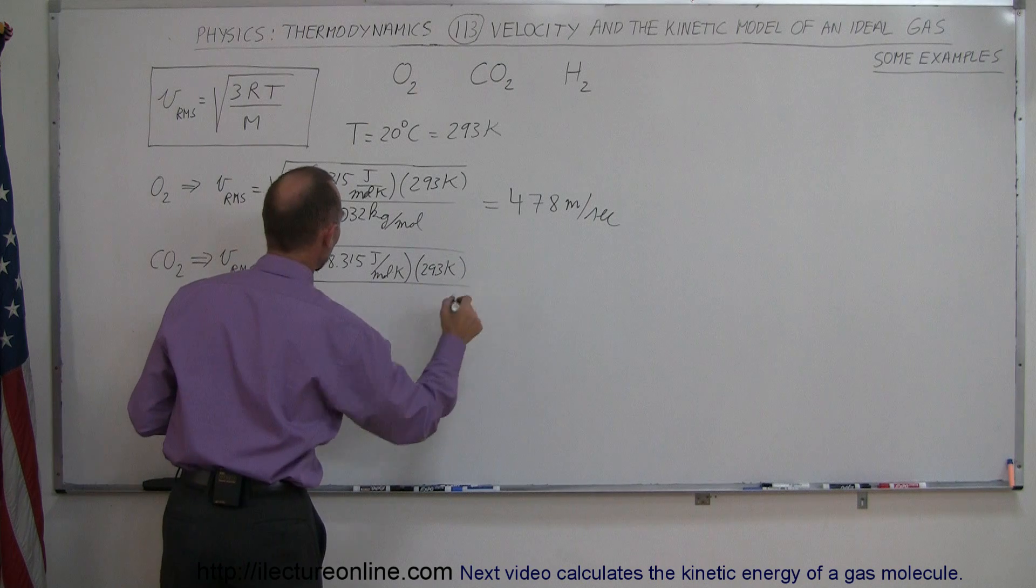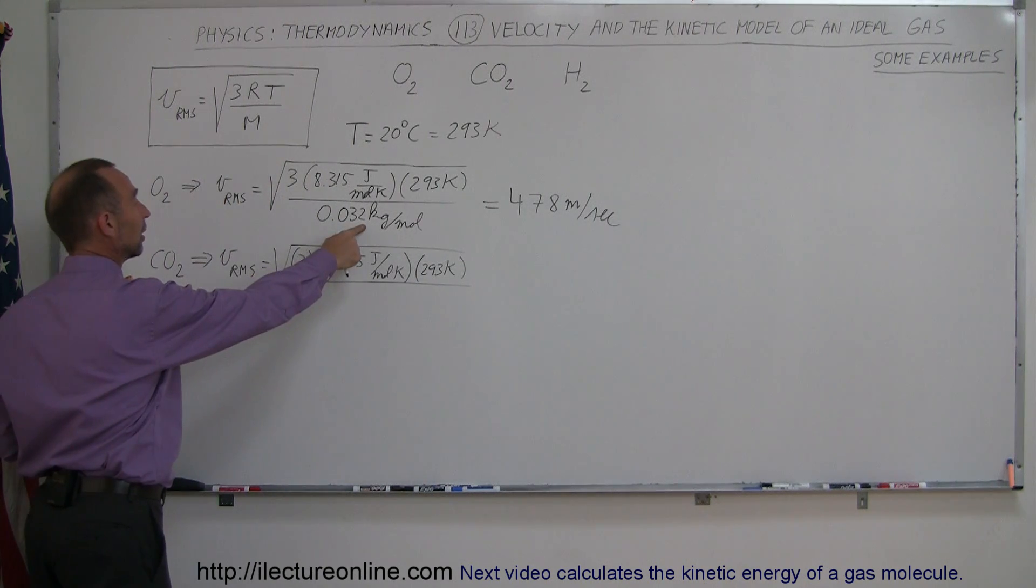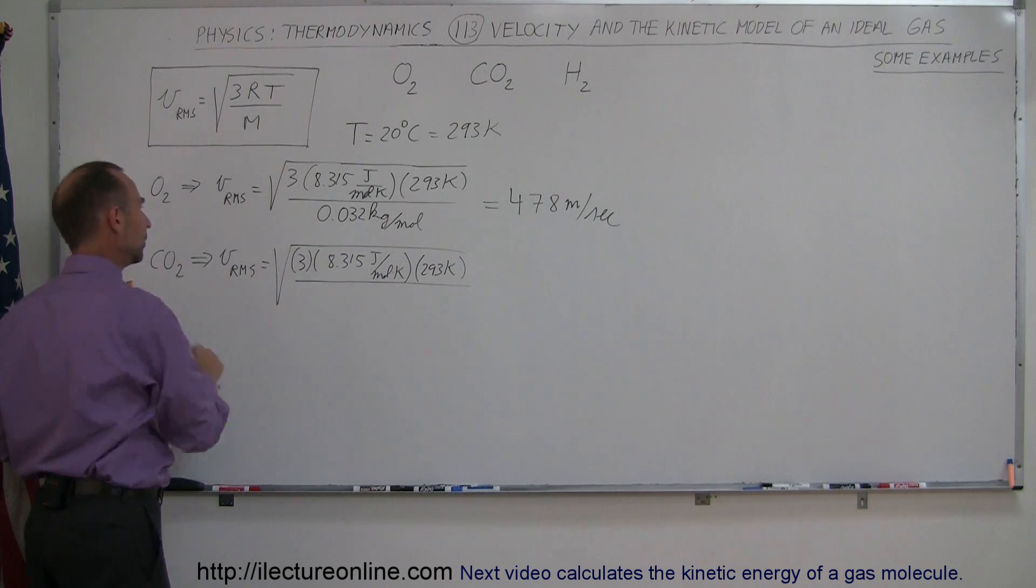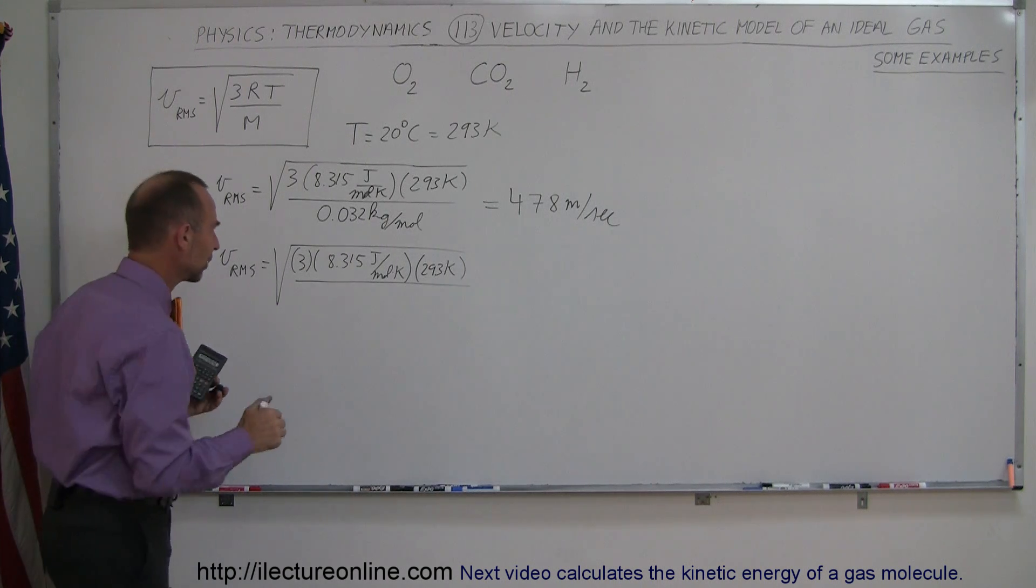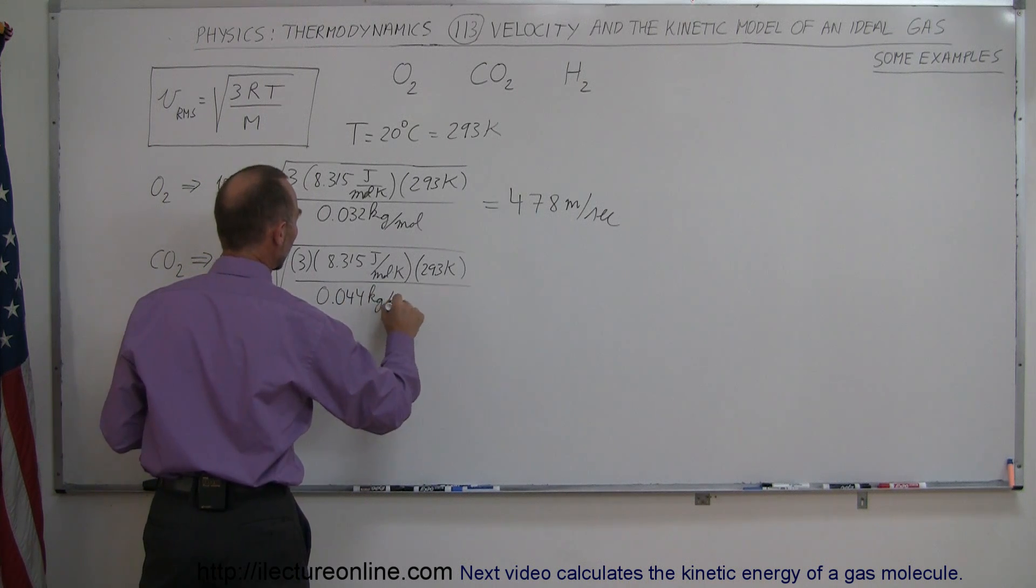Now, what is the molar mass of carbon dioxide? For the oxygen, it's 32 grams per mole, and carbon is another 12 grams per mole, so that would change that to 0.044 kilograms per mole.